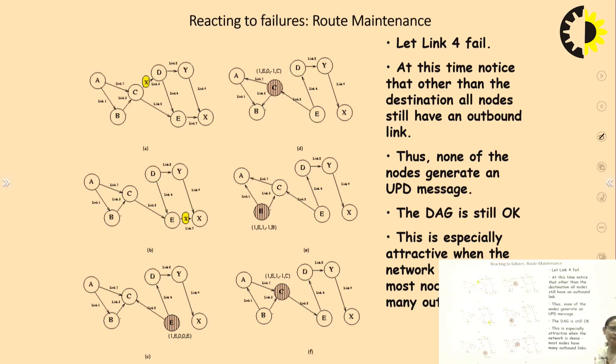What happens when the link fails? That is the route maintenance part. Let us suppose link 4 failed. At this time notice that other than the destination, all nodes still have an outbound link. Thus none of the nodes generate the UPD message. This DAG is still working. This is especially attractive when the network is dense. Most nodes have many outbound links and sometimes single failure does not impact the route maintenance part.